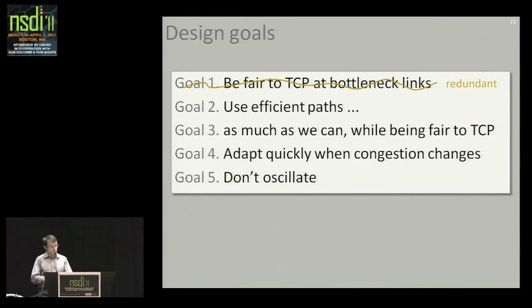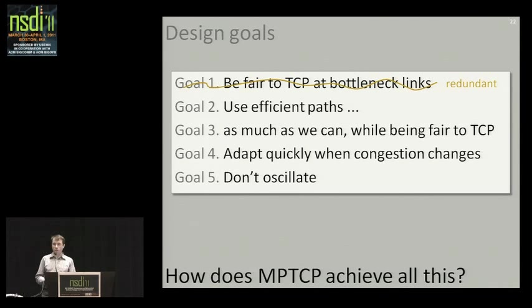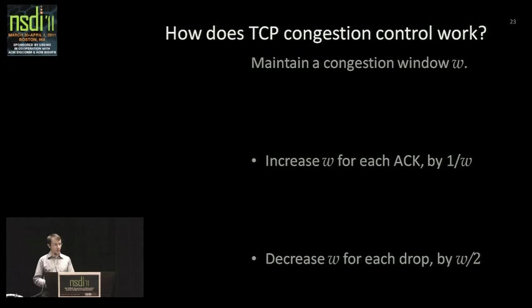What does our protocol look like for solving all of these goals? Before stating our algorithm, let me recap what TCP is, since our algorithm is very closely based on it. TCP maintains a congestion window W. Every time you get an ACK back, you increase W, and every time you detect a drop, you decrease W. That's TCP.